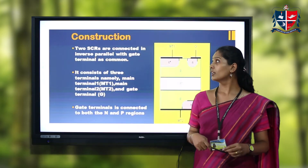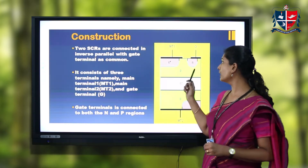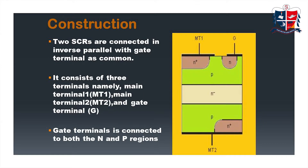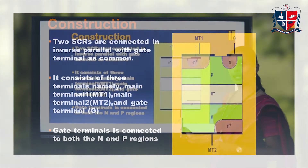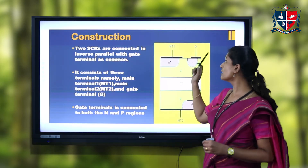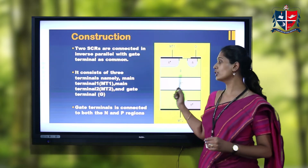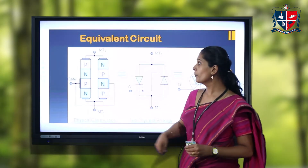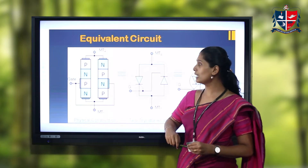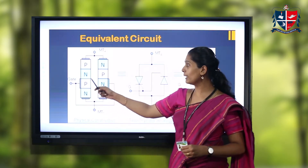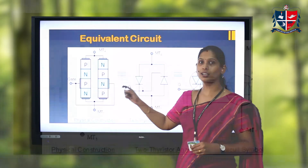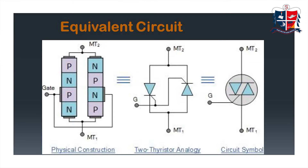TRIAC is available with a maximum rating of about 16 kilowatts. Now let's see the construction of a TRIAC. Here you can see that there are two SCRs connected in an inverse parallel manner. There are three terminals for a TRIAC: MT1 (main terminal 1), MT2 (main terminal 2), and G (the gate). The gate is a common terminal connected to both SCRs, connected to the N and P regions of either SCR, making it a bidirectional thyristor.